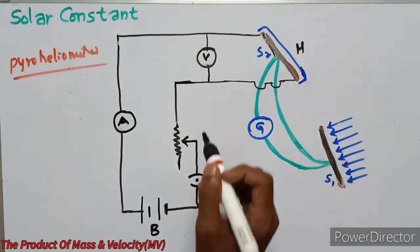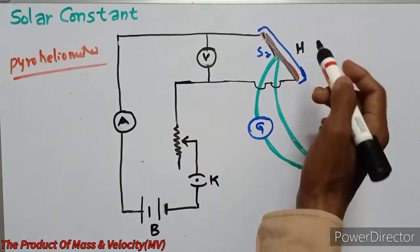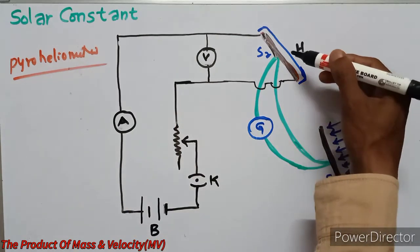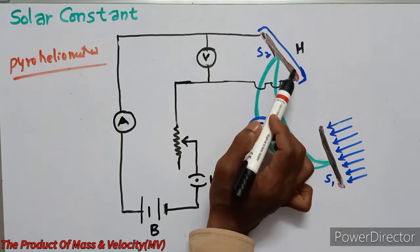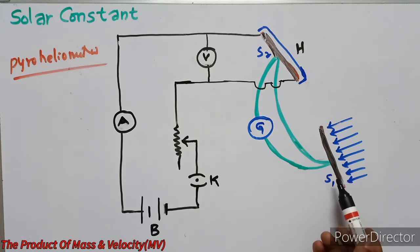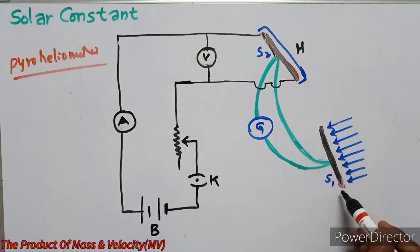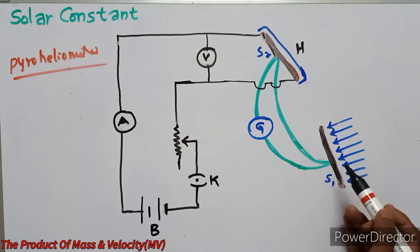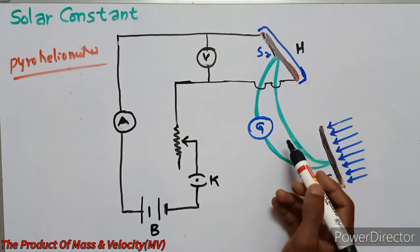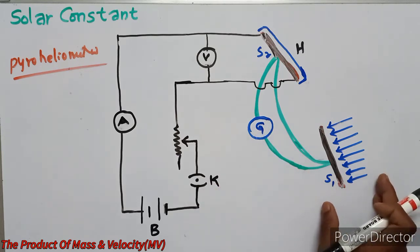S2 is heated by means of an electrical circuit. When S1 is exposed to the sun, its temperature rises and consequently the galvanometer shows a deflection. The current is given in the circuit and the strip S2 is heated.